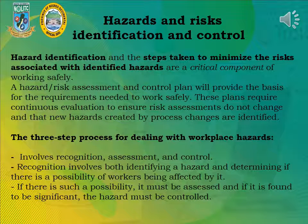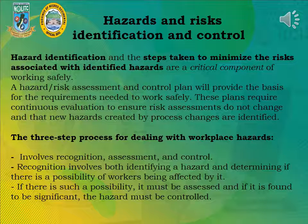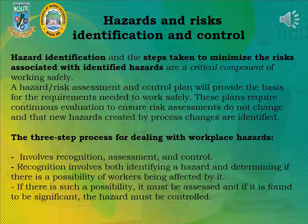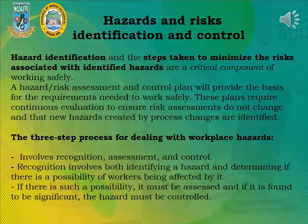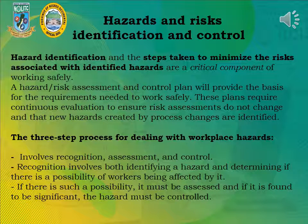Hazard identification and the steps taken to minimize the risks associated with identified hazards are a critical component of working safely. A hazard risk assessment and control plan will provide the basis for the requirements needed to work safely. These plans require continuous evaluation to ensure risk assessments do not change and that new hazards created by process changes are identified. The three-step process for dealing with workplace hazards involves recognition, assessment, and control.